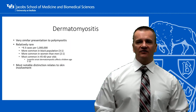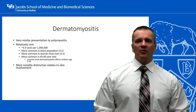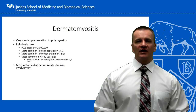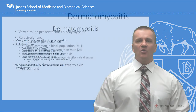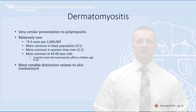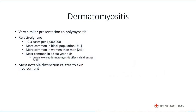Dermatomyositis is a relatively rare condition, but will affect about one in 100,000 individuals — a little more than what is typically seen with polymyositis. As with polymyositis, dermatomyositis tends to be more prevalent in the Black population and in females compared to males. It is most common in individuals in the 45 to 60-year age range, which helps to distinguish it from limb-girdle muscular dystrophy.